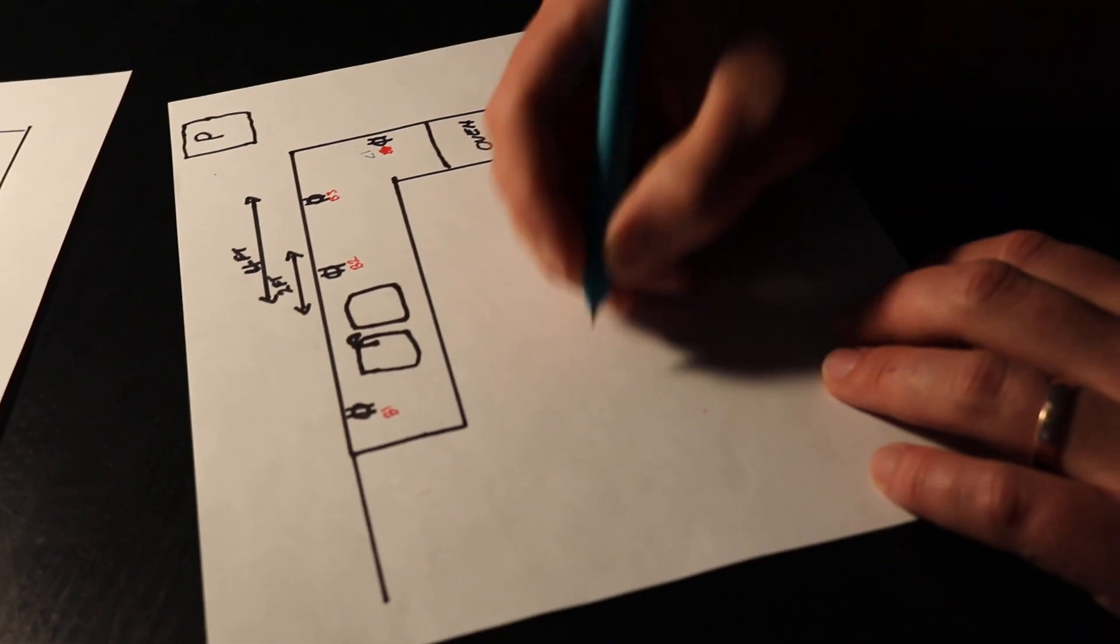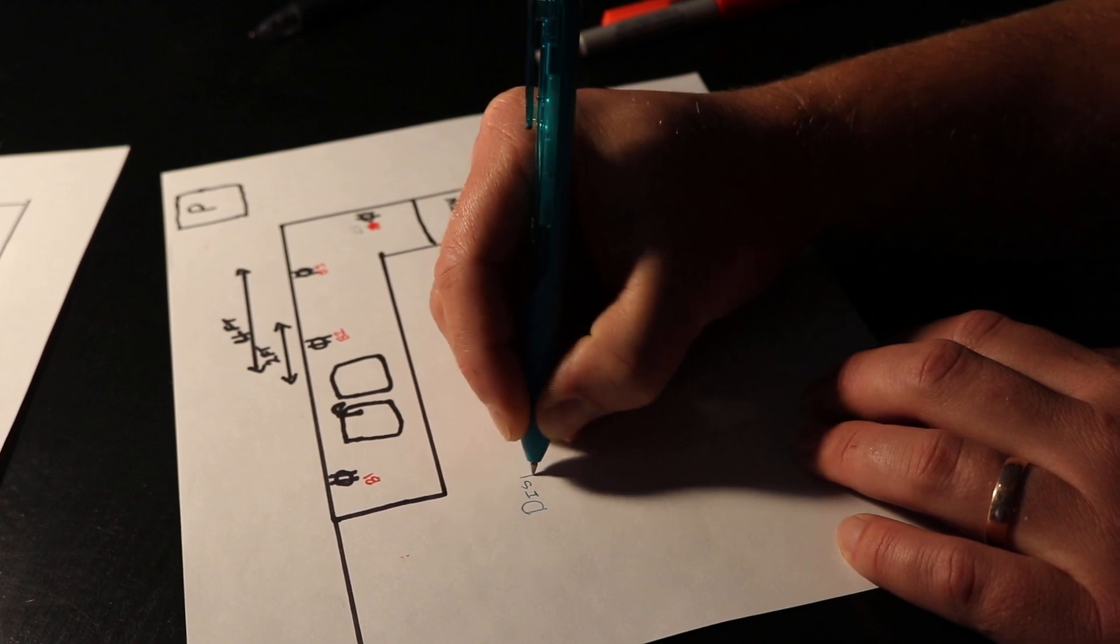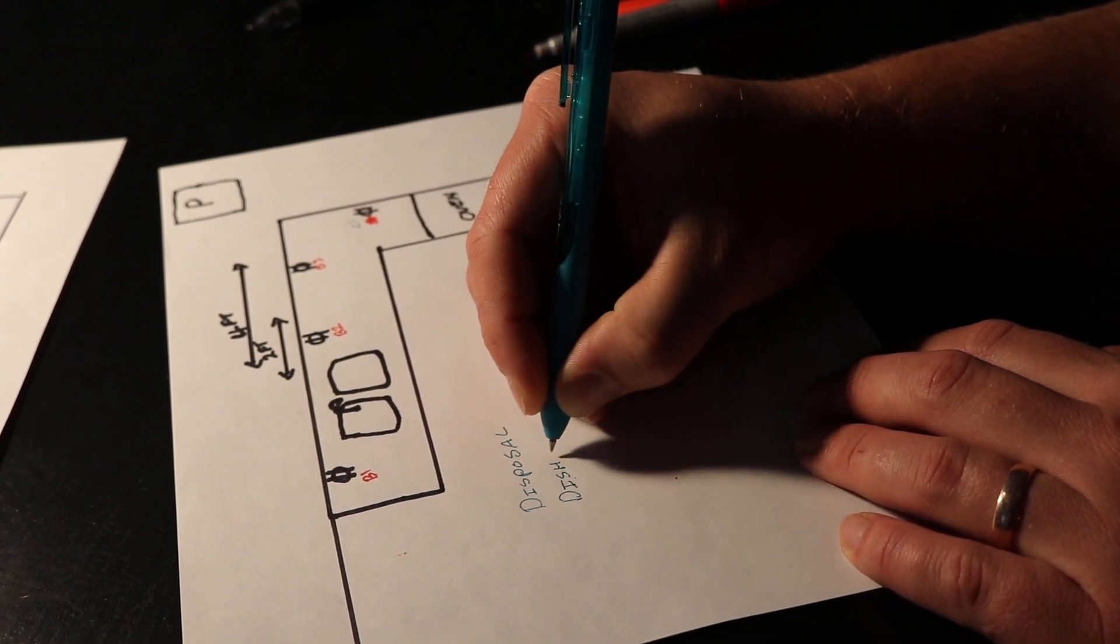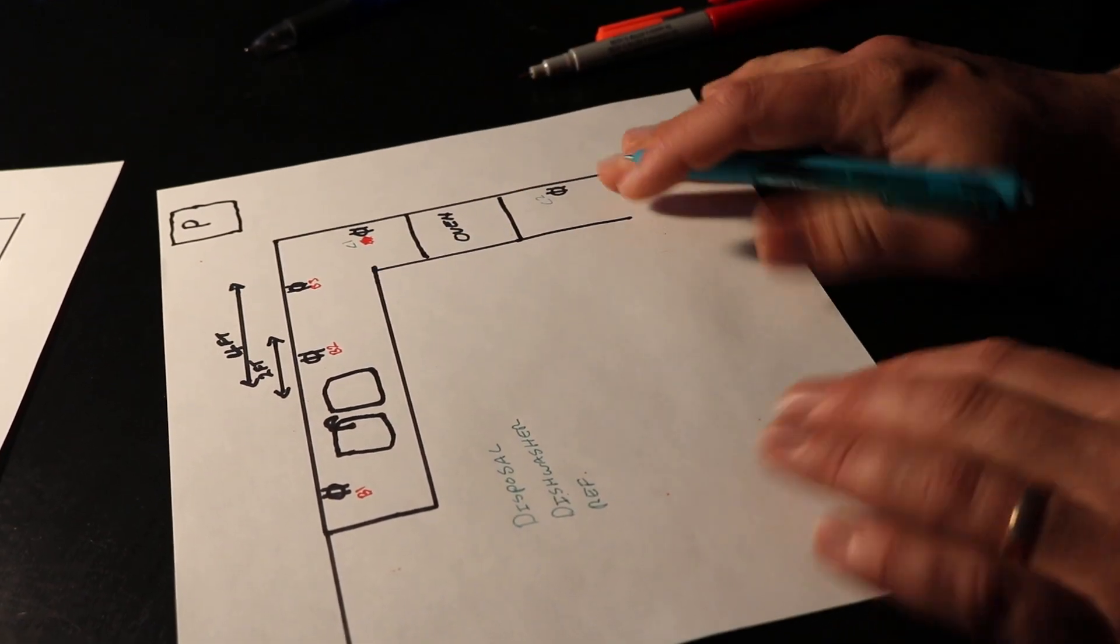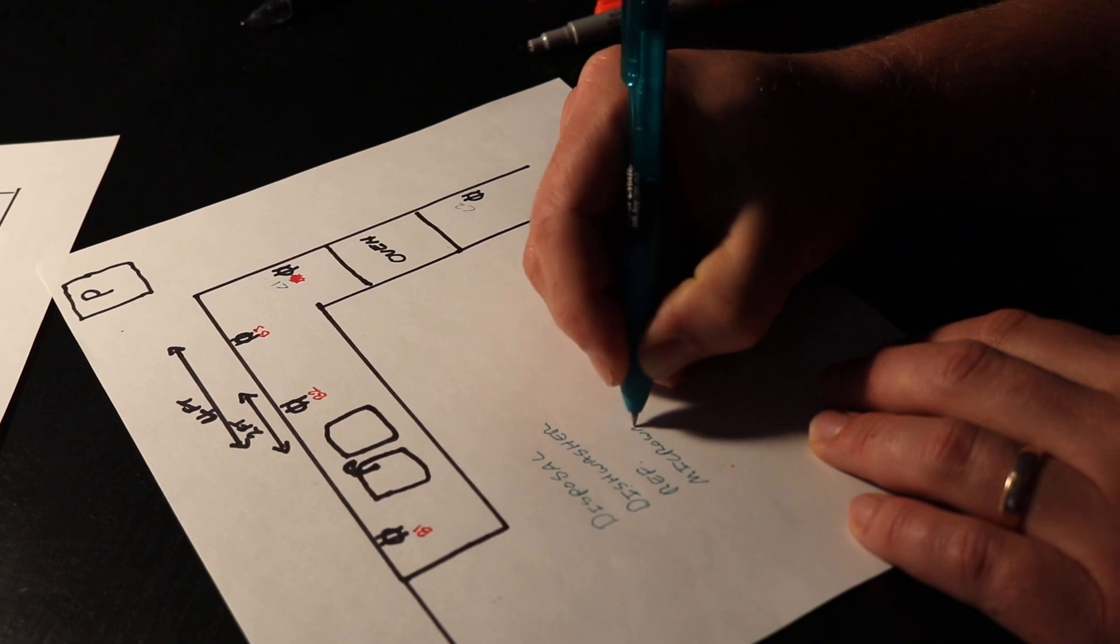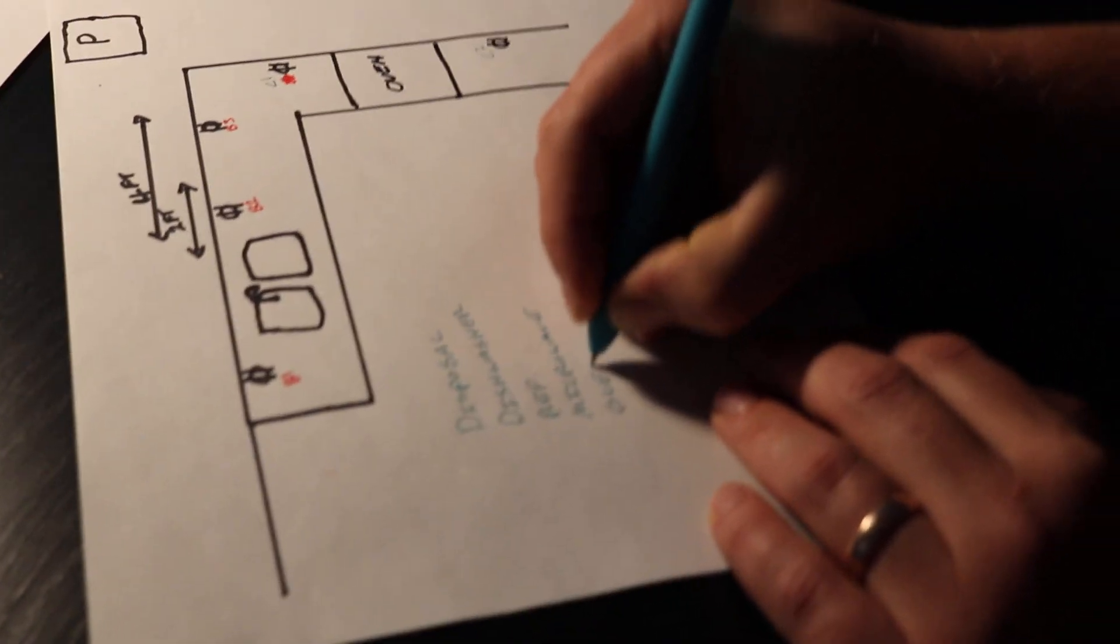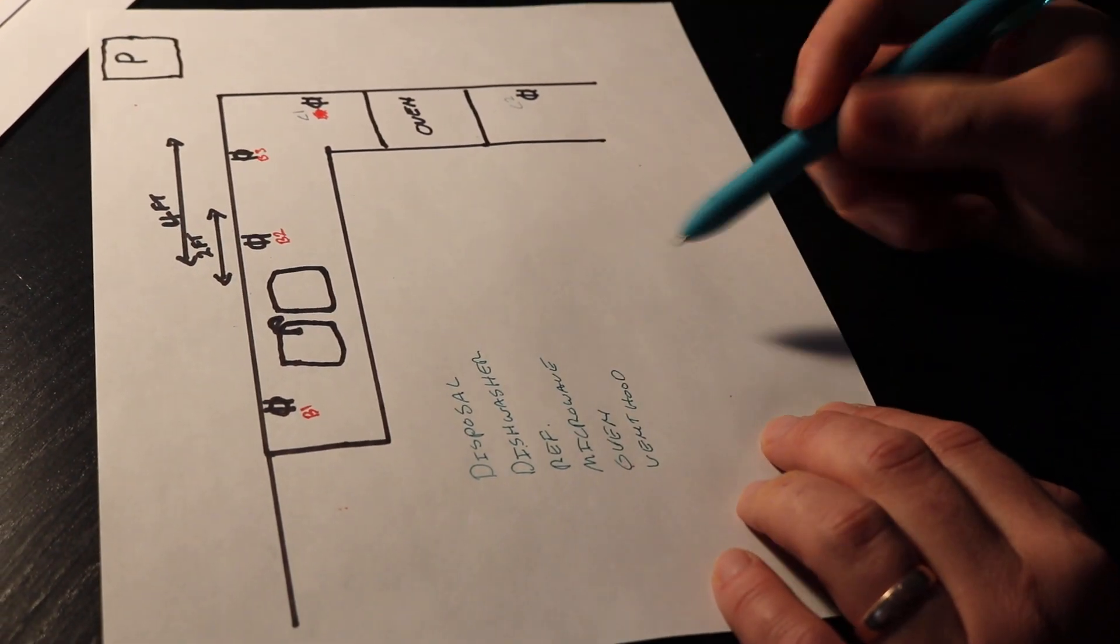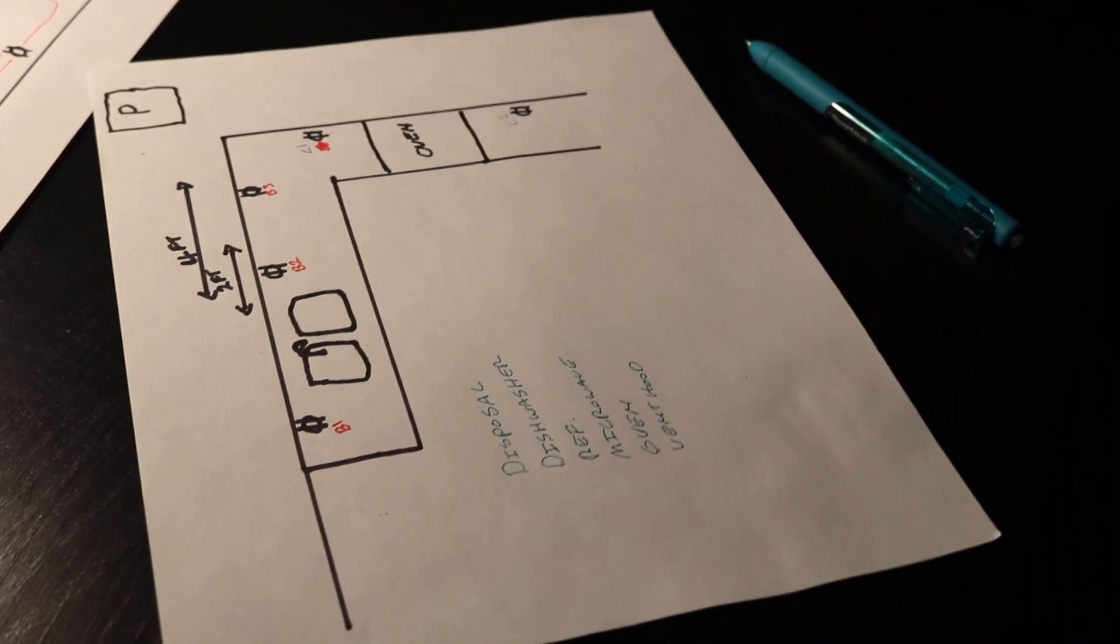Outside of that in your kitchen, you're going to have a disposal, dishwasher, refrigerator, microwave which would need to be on dedicated, oven, vent hood. That's usually your typical appliance setup.